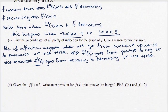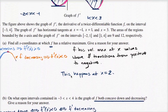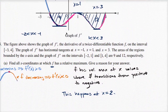This happens at x equals negative one, x equals one, and x equals three. These are the three points on our graph of f' where we see f' going from decreasing to increasing, or increasing to decreasing.